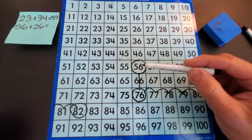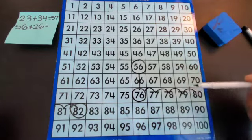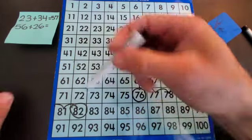I started at 56 and I counted up to 26. 10, 20, 1, 2, 3, 4, 5, 6. 56 plus 26 is 82.